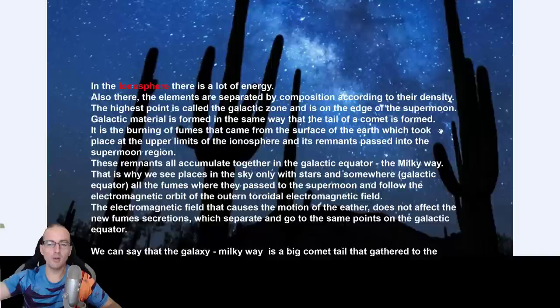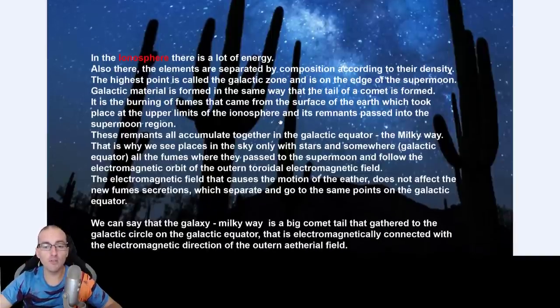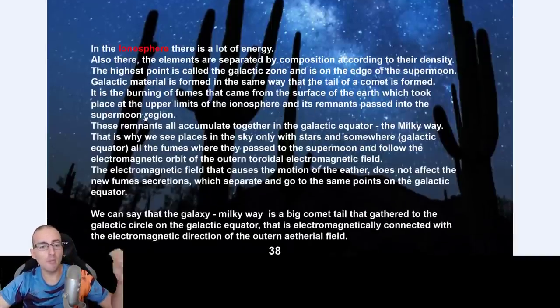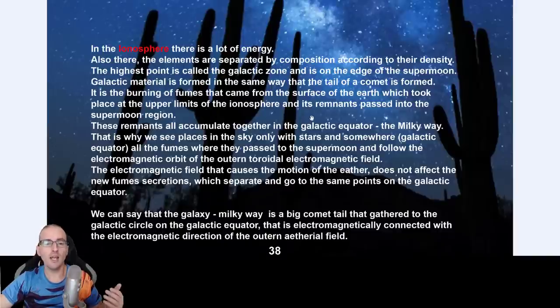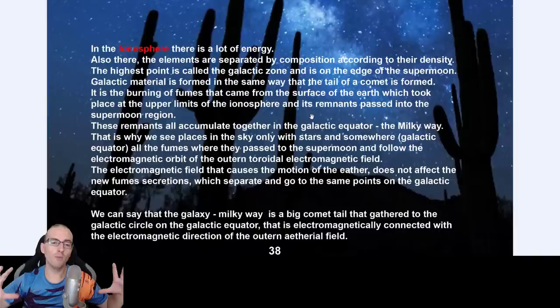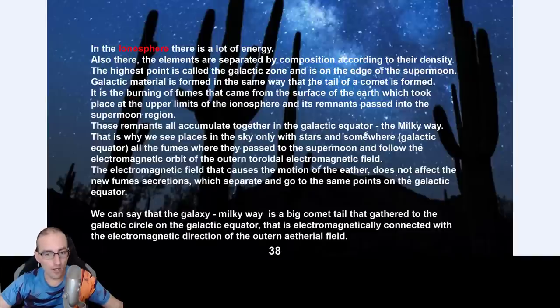So it's the burning of fumes that come from the surface of the earth, which took place at the upper limits of the ionosphere, and its remnants passed into the supermoon region. That's very important because then you're going to understand why there's such a concentrated energy there of what we call the Milky Way. So these remnants all accumulate together in the galactic equator, which is called the Milky Way.